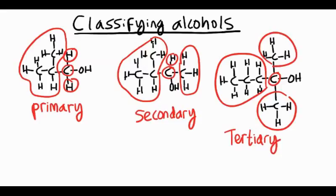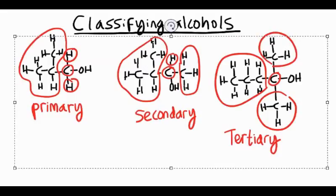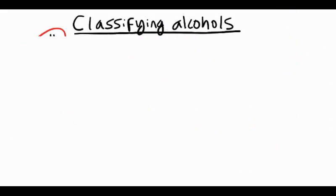The main thing to do is just look at that carbon that the OH group is attached to and check how many alkyl groups are attached to it, and you can work out whether it's primary, secondary, or tertiary.